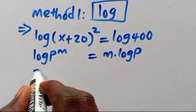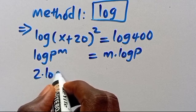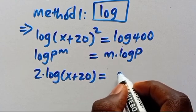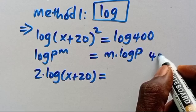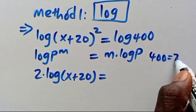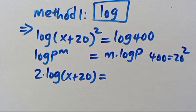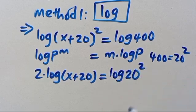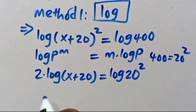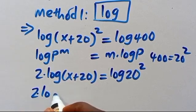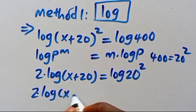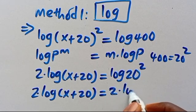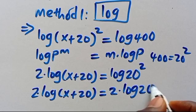From here, we have 2·log(x+20) = ... Note that 400 = 20². So this will be log 20². We have 2·log(x+20) = 2·log 20.